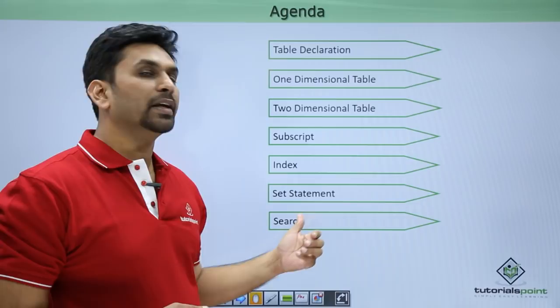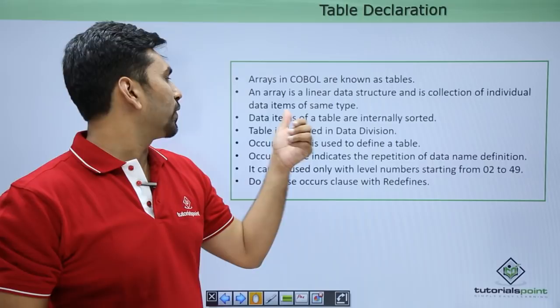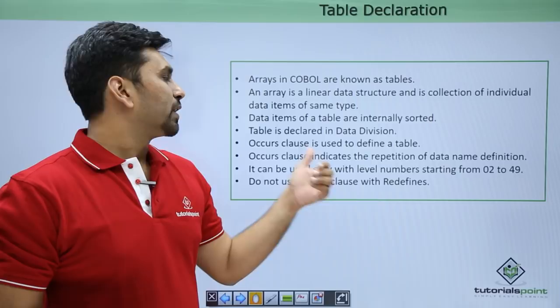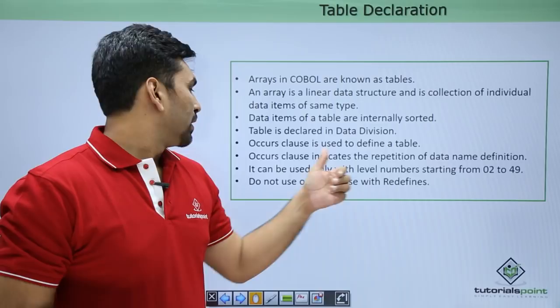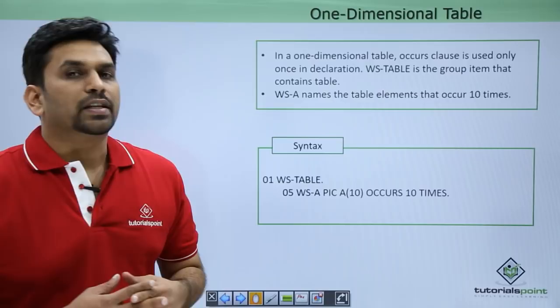Arrays in COBOL are known as tables. A table is a linear data structure and a collection of individual data items of the same type. Data items of a table are internally sorted. Tables are declared in the Data Division and the OCCURS clause is used to define a table. It can be used only with level numbers from 01 to 49, and do not use the OCCURS clause with REDEFINES.